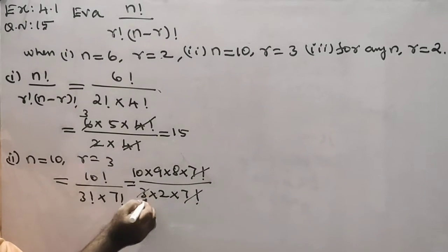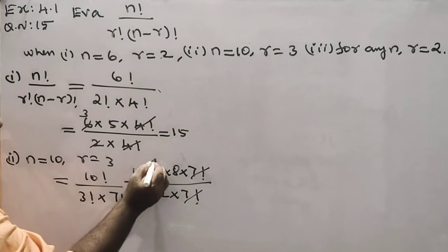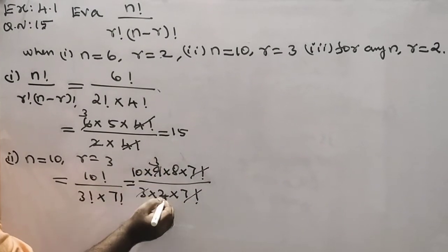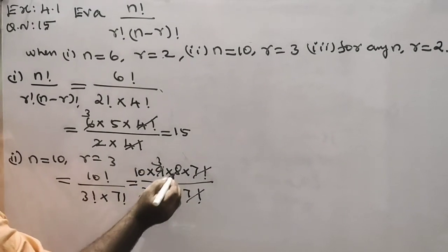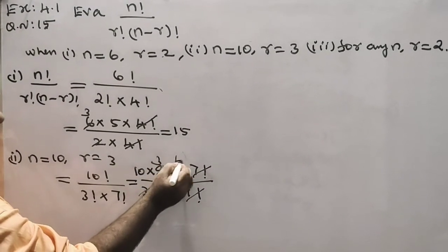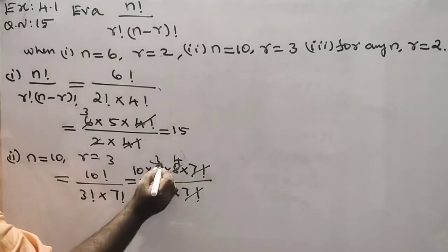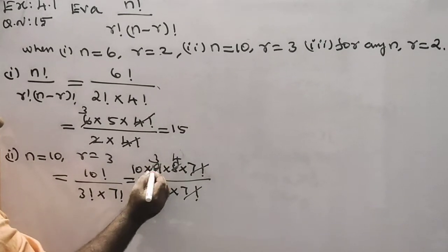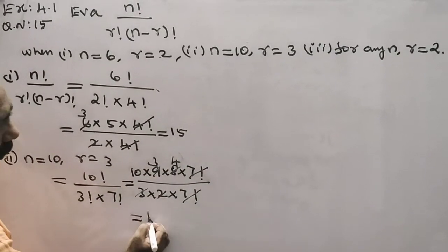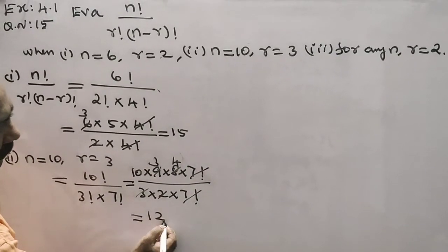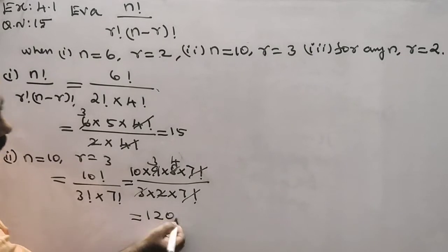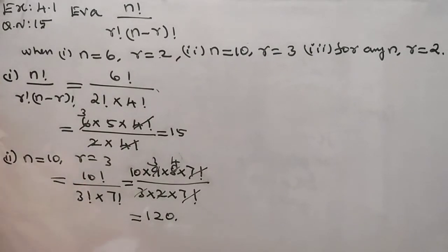In the denominator: 3 into 2. From the 3 table: 3 into 3 is 9, and 9 into 2 gives denominator 6. Multiplying: 10 into 9 into 8 divided by 6, which gives 120. Next, third problem.